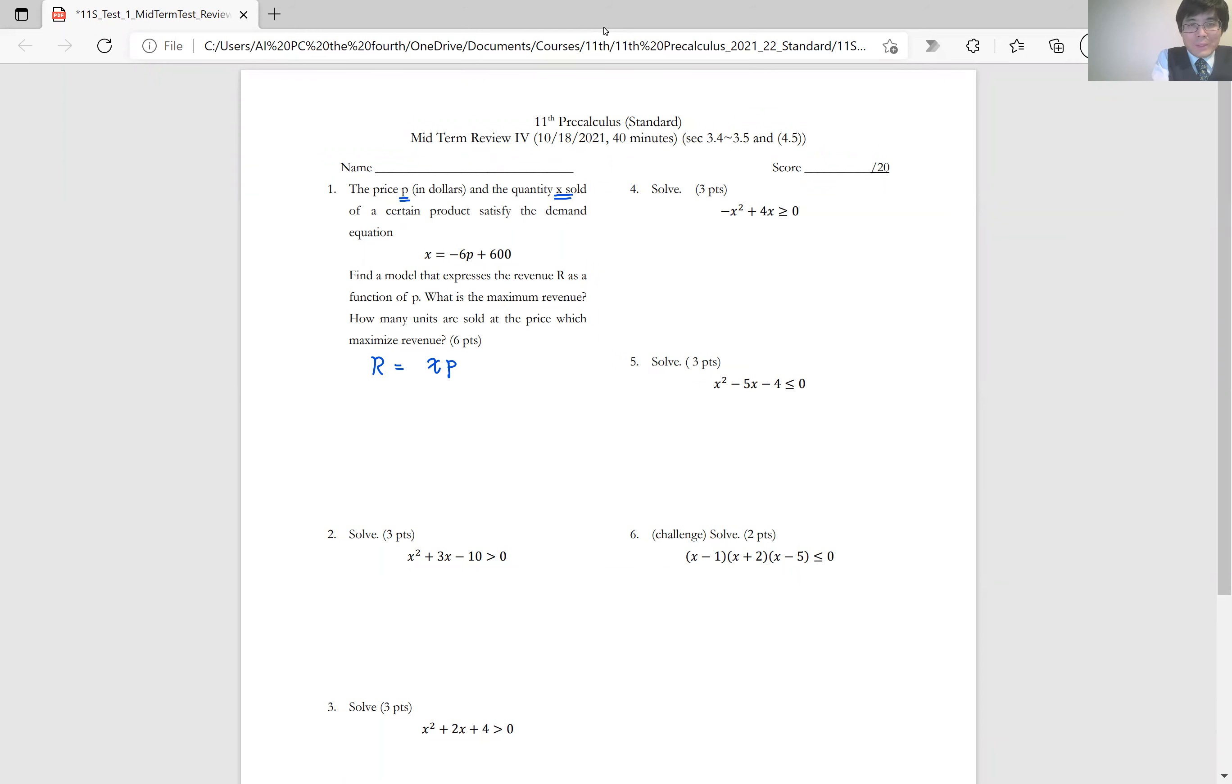Now we want to express the revenue as a function of p. So I have to replace x by p, but we already know x is negative 6p plus 600. So this is same thing as negative 6p plus 600 times p. Let's rewrite this expression by factoring out negative 6. So it's going to be negative 6p times p minus 100.